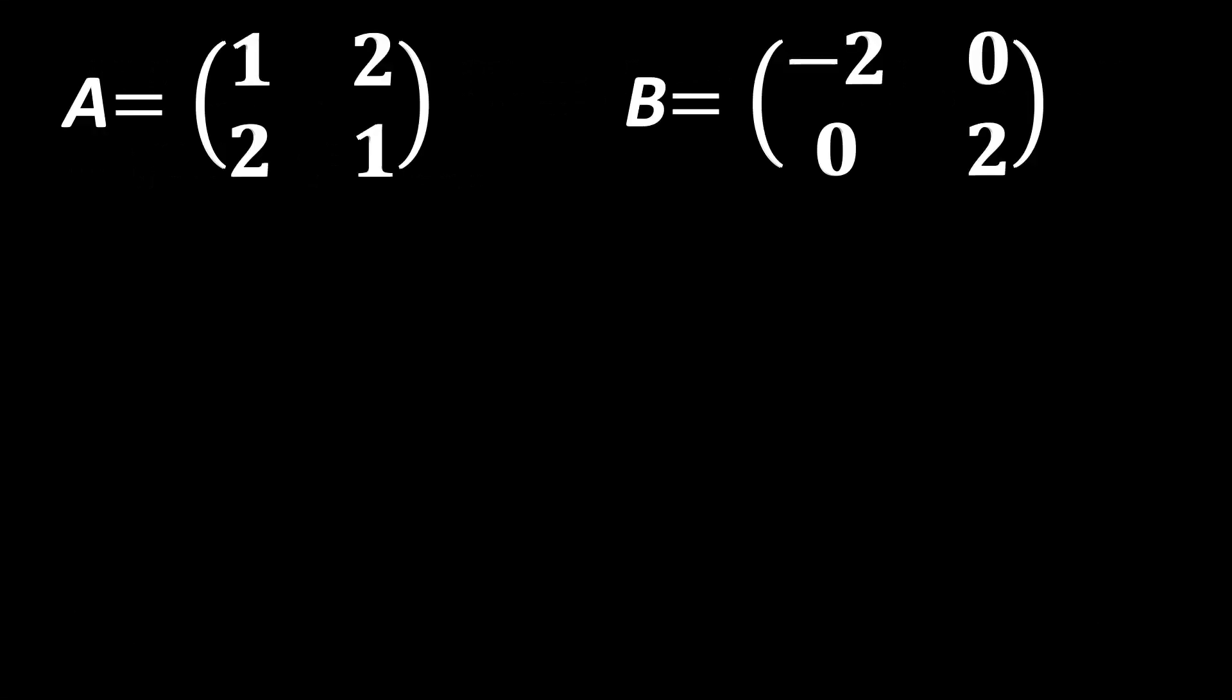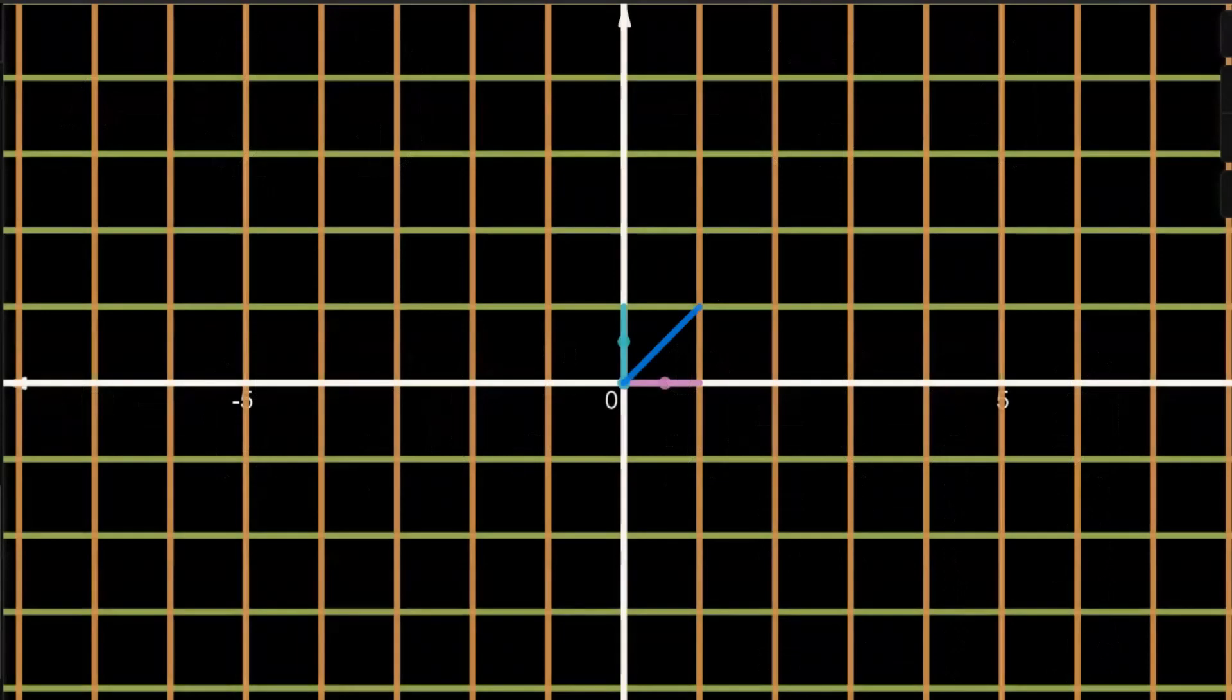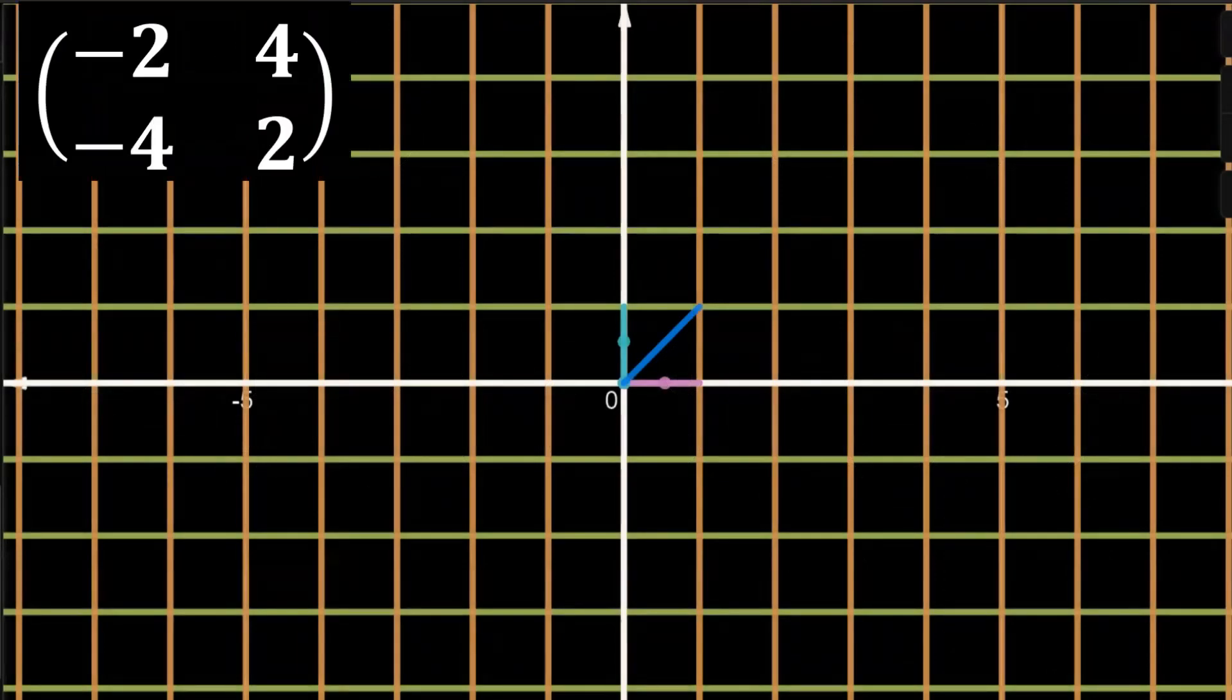Now let's get back to the applications on matrices starting with matrix multiplication. Assume we have two matrices A and B. Multiplying A by B has two meanings. Algebraically, it basically means row column multiplication. However, it has a special geometric meaning. To understand that, consider this example.